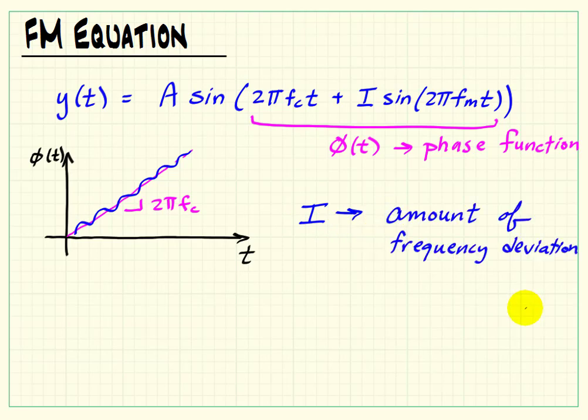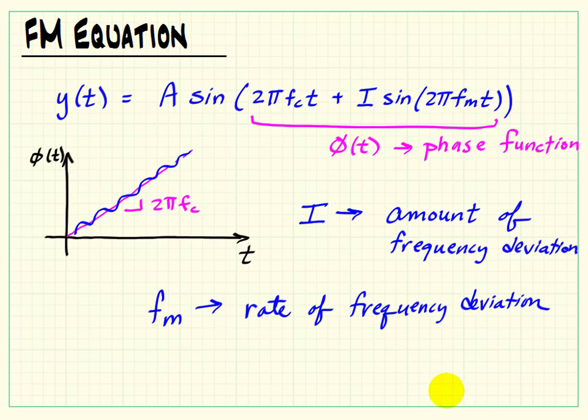So we can think of that as the amount of frequency deviation that's occurring. F sub m is our modulation frequency and that simply dictates the rate at which we cause that frequency deviation to occur.